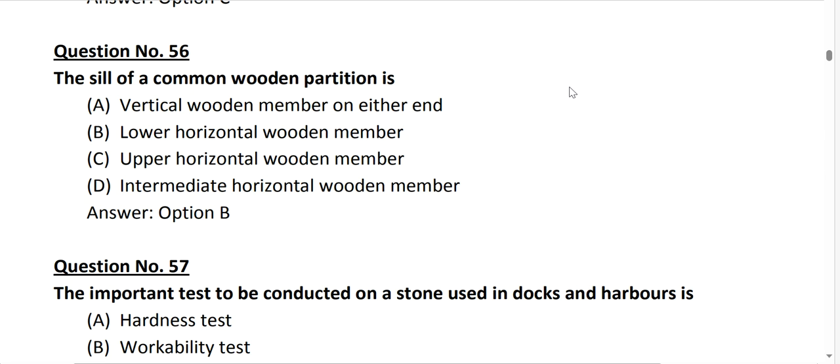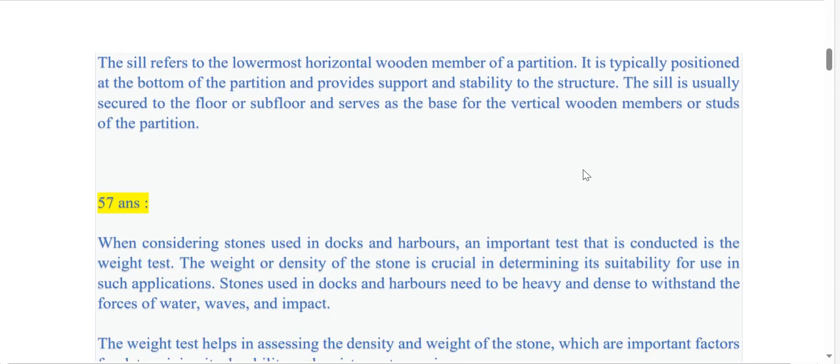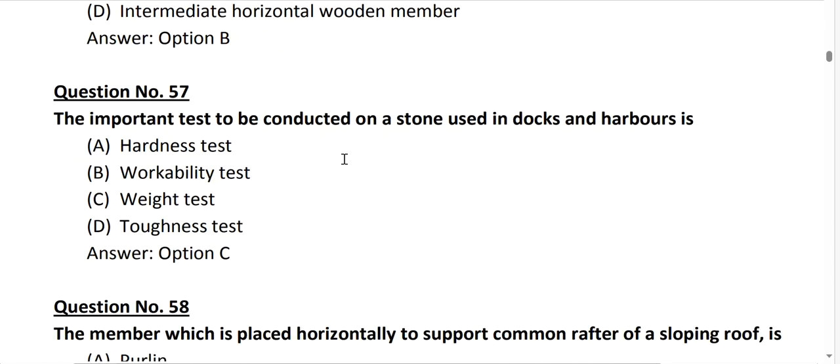In the grillage foundation, it is basically a type of foundation which distributes the load of a structure over a large area. The distance between flanges in a grillage beam is typically kept equal to the flange width. Question number 56, the sill of a common wooden partition is the lower horizontal wooden member. The sill refers to the lowermost horizontal wooden member of a partition.